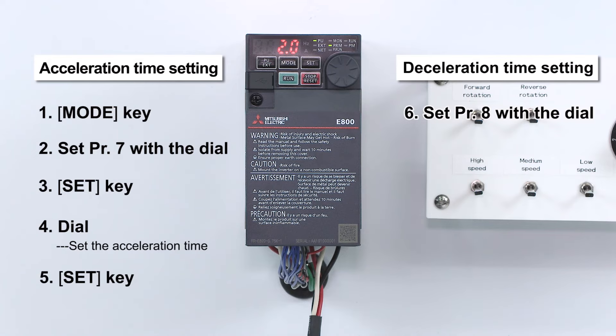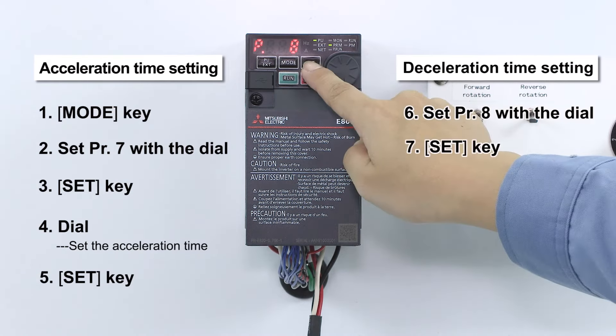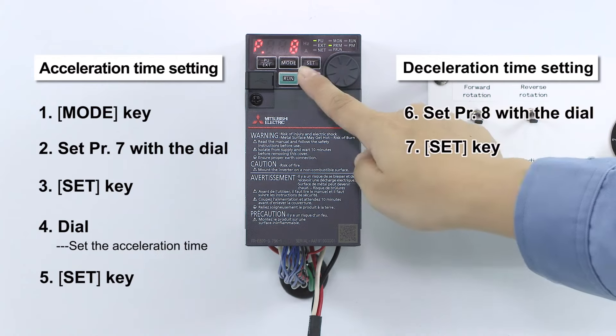Parameter 8 controls the deceleration time from the selected frequency until the motor stops.